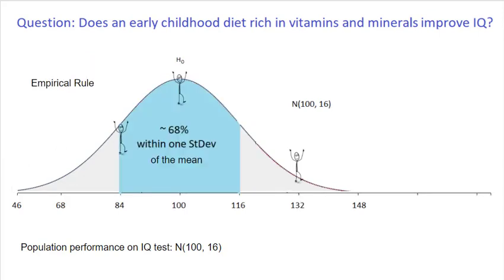Think about the empirical rule, which says that 68% of the population is within plus or minus one standard deviation of the mean. In this case, where the mean is 100 and the standard deviation is 16, that means 68% of the population has an IQ between 84 and 116.